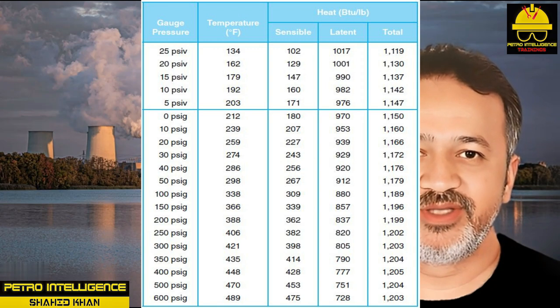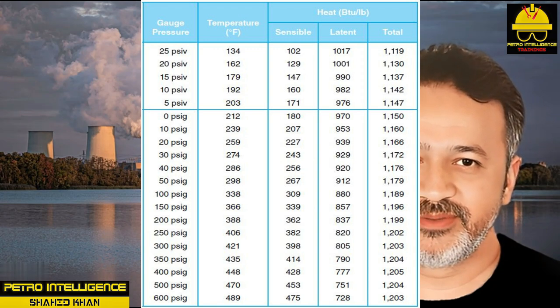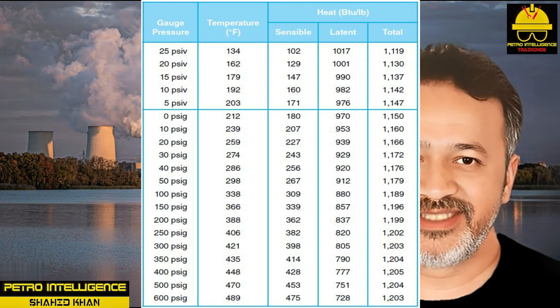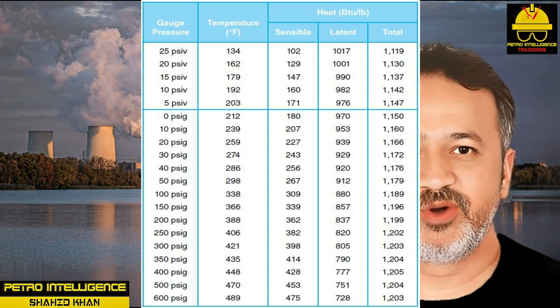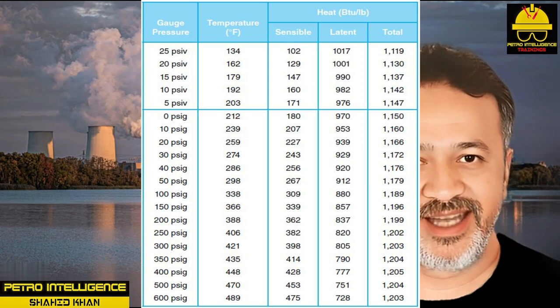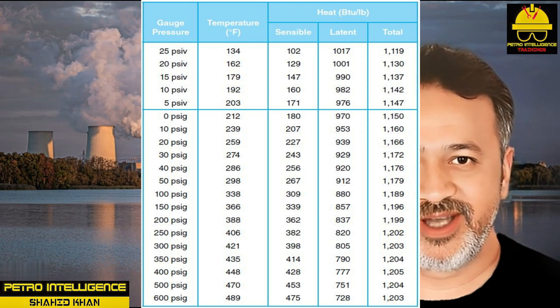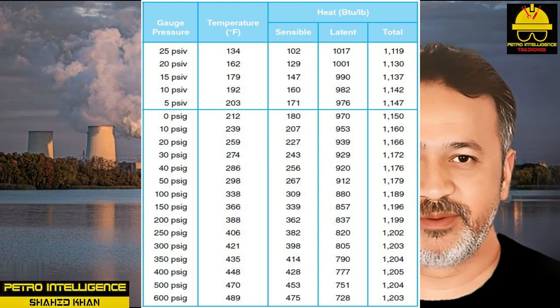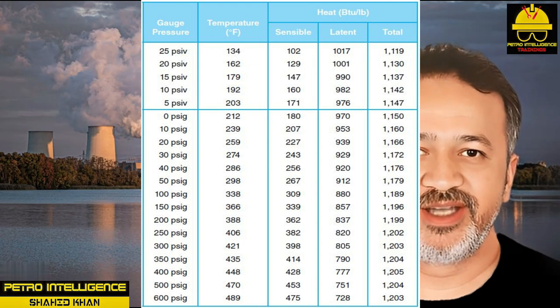Examples of an acid include lemon juice, sulfuric acid, and hydrochloric acid. Examples of an alkaline include ammonia, soap, bleach, and drain cleaner.